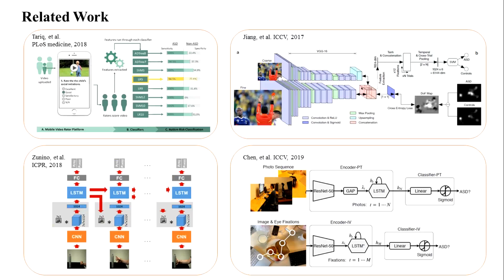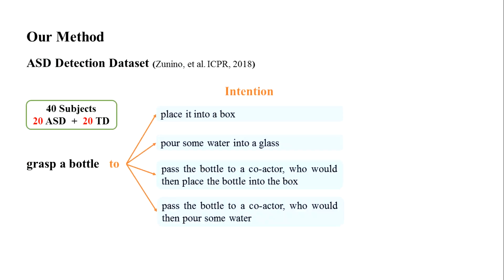Here are some related works on automatic ASD detection. Now I will introduce our proposed method. First, let's have a look at this dataset. It contains video clips of 40 subjects performing reach-to-glass actions with four different intentions.